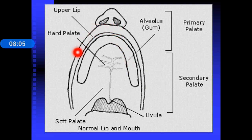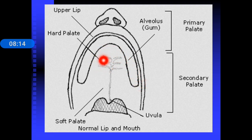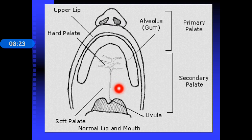In the diagram, this line represents the upper lip, this represents the alveolus, here is the hard palate, this is the soft palate, this is the uvula, and this is the nasal cavity. These five structures need to be shown in order to depict the various types of cleft lip and cleft palate.